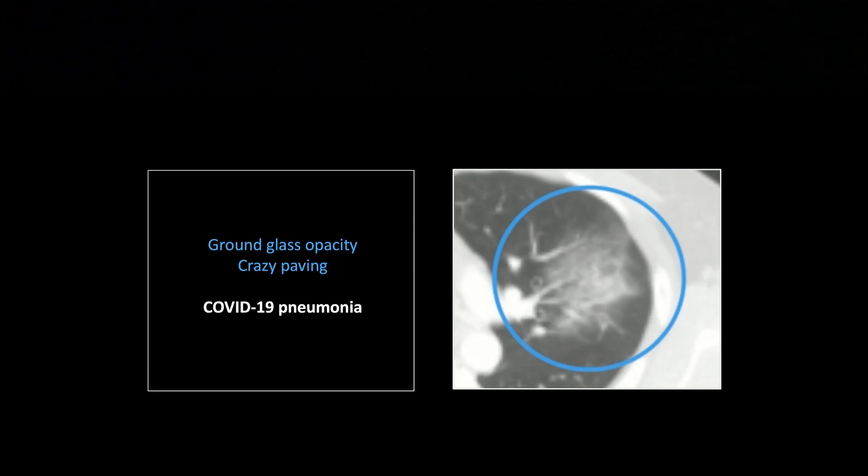Ground glass is defined as parenchymal density, lung density that still allows you to identify underlying structure. If you look towards the anterior portion of this parenchymal density, you can see vessels still running through that area of alveolar density. That is the very definition of ground glass.